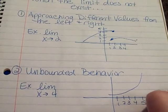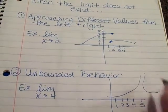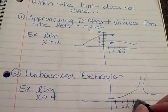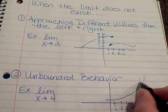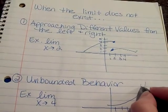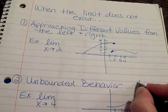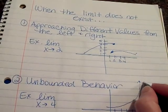And from the right, we're coming up this way. So here's our x equals 4. If we look up here, it's unbounded. This is what we call unbounded behavior because the graph just keeps going up and up forever. It's approaching infinity.